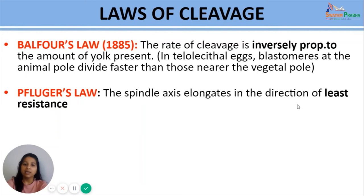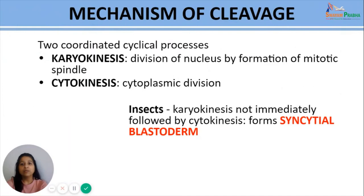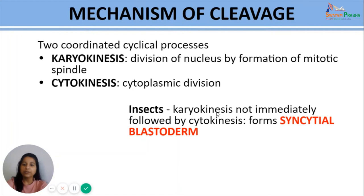Next, the mechanism of cleavage. Cleavage consists of two coordinated cyclical processes: karyokinesis, involving division of the nucleus by formation of mitotic spindle, followed by cytokinesis, the cytoplasmic division. It is important to note that in insect eggs, which are centrolecithal in nature, karyokinesis is not immediately followed by cytokinesis, which helps in the development of syncytial blastoderm during cleavage.